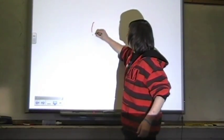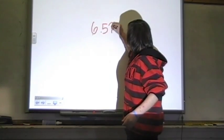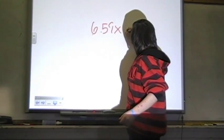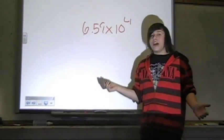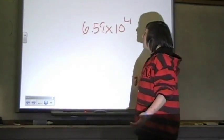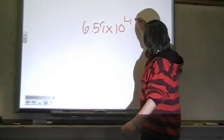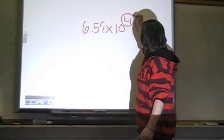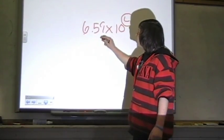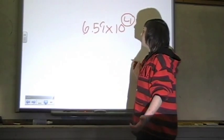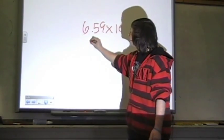Alright, 6.59 times 10 to the 4th. Today I'm here to tell you about scientific notation. What you do with scientific notation is you take this number and you move your decimal point over that many places, pretty much. There's not much more to it.